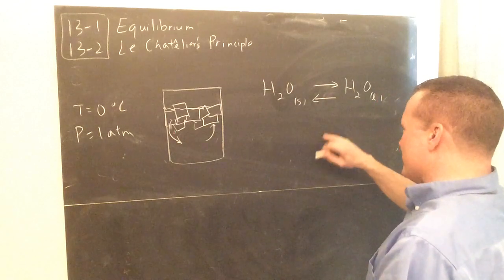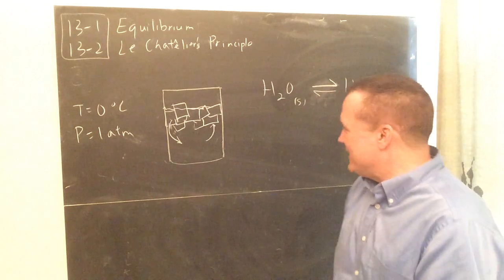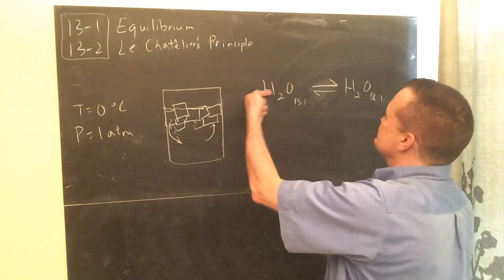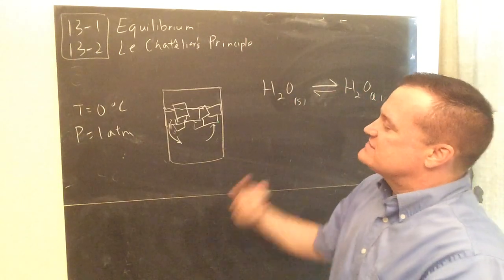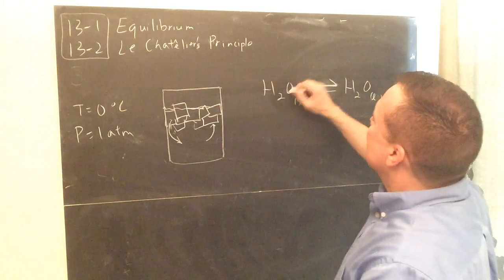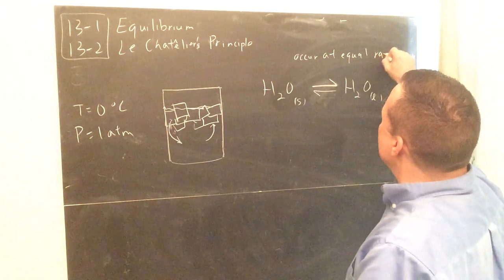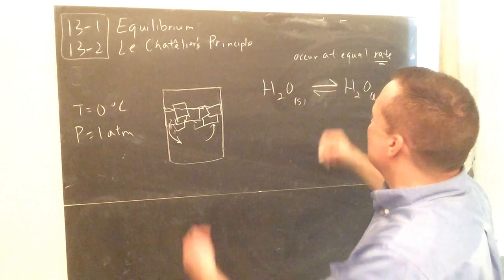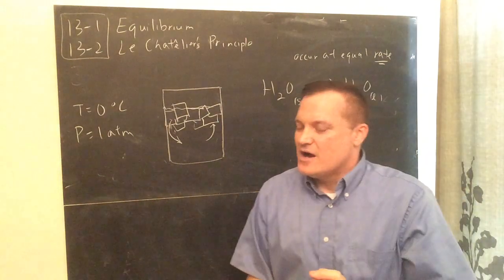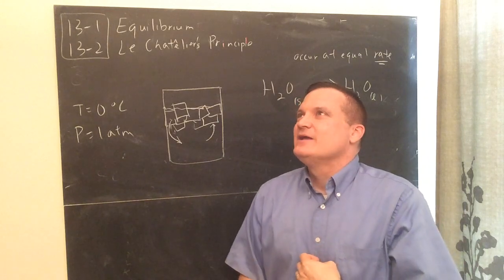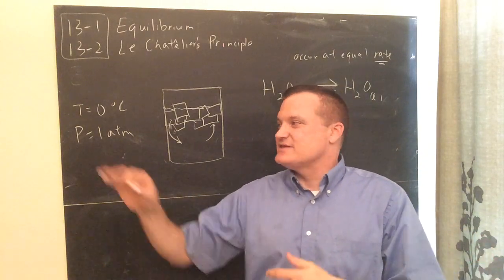This double arrow — most of the time including on the AP they draw a half arrow up and down — means you have two reactions going on: ice is melting to water and water is freezing to ice. In equilibrium these two reactions occur at equal rates. The rate is what's equal in equilibrium — only the rate is exactly equal, because the forward reaction rate and the backward reaction rate are exactly the same.